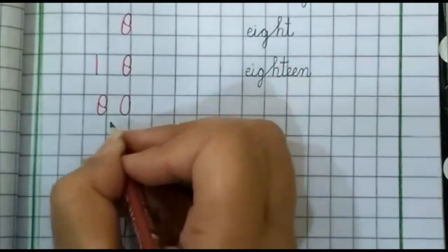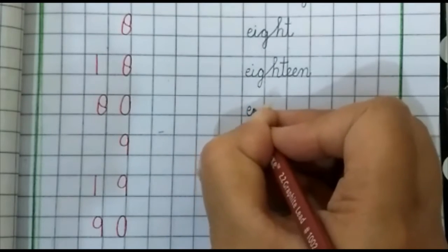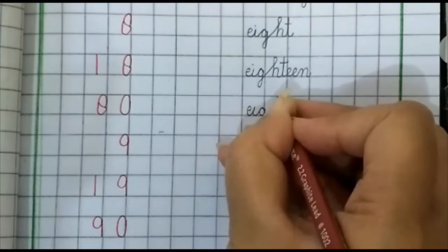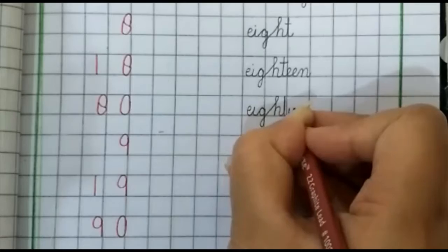Eighteen. Next number is 80. E, I, G, H, T, Y. Eighty.